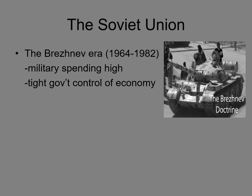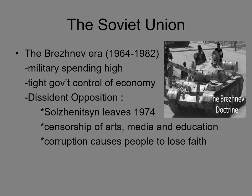Khrushchev was forced from office in 1964, and Leonid Brezhnev became the next leader. He undoes many of Khrushchev's reforms and tightens his grip on Eastern Europe, leading many people to seek political asylum in the West. One dissident was the writer Alexander Solzhenitsyn, who wrote about the gulag system from Stalin's time. Years of oppression and economic woes created much opposition. The system that promised equal distribution of wealth didn't live up to its goals — the system was imploding from within.